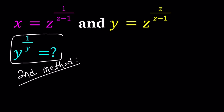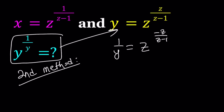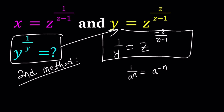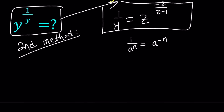This is what I'm trying to find, and I do have a value for y, so why not replace y with that? And 1 over y is going to become the reciprocal. We can write the same thing with a negative exponent — 1 over a to the power n can be written as a to the power negative n, so you just negate the exponent. So, y is z to the power z over z minus 1, and 1 over y is z to the power negative z over z minus 1.